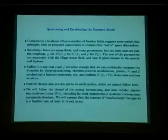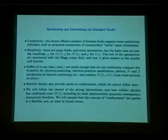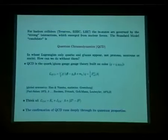G and G prime, the couplings for SU2 left and U1, are small enough that we can confidently compute the S-matrix for electron scattering, electron-positron scattering, photons, W and Z production, leptonic scattering, and confirm SU2 left cross U1 from cross-sections through the simplest Feynman diagrams. We'll follow the thread of the strong interactions and how collider physics has confirmed color SU3, including its most characteristic quantum consequence, asymptotic freedom.